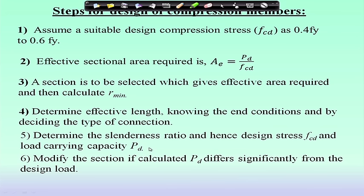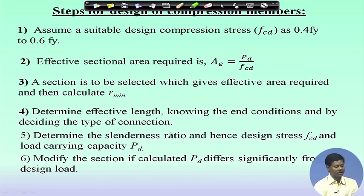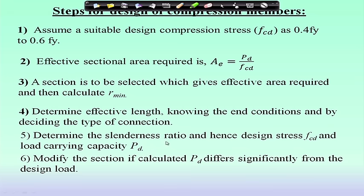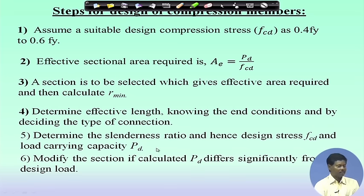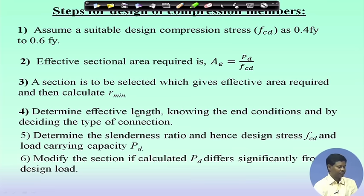And if we see that the load-carrying capacity is quite high compared to the external force, we have to reduce the section size, because otherwise it will be too conservative and uneconomical. To make it economic, we choose a section such that the external force and design compressive force are more or less similar — the design compressive force should be slightly more than the external force. This is how, by an iterative process, we can design a compressive member.